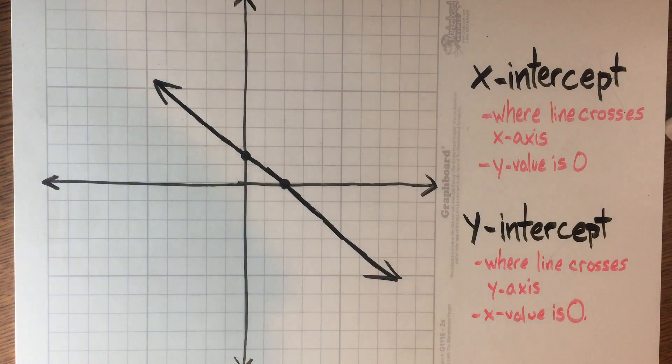Okay, so the two terms that we're going to define right now is the x-intercept and the y-intercept of an equation or the graph of a line.